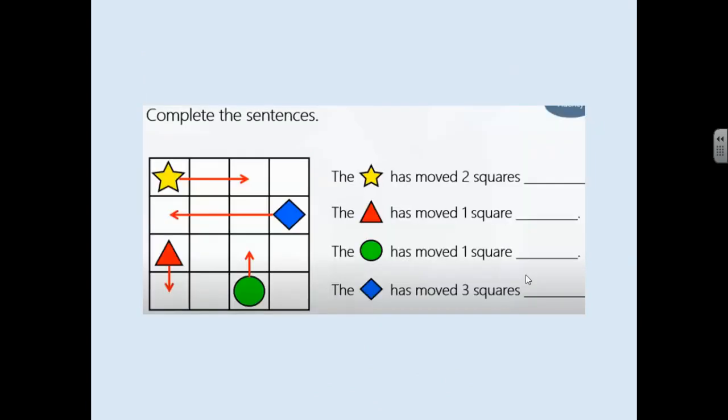In your workbook what I would like you to do is complete these sentences. So the star has moved two squares, the triangle has moved one square, the circle has moved one square, the square has moved three squares. Now the language you're going to be using is right, left, up and down.